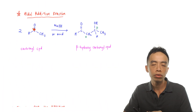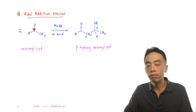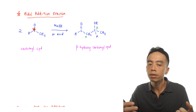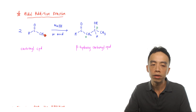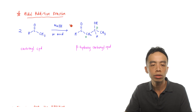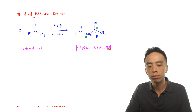Essentially, aldol addition reaction is the reaction between two carbonyl compounds — it can be two aldehydes, two ketones, or even one aldehyde and one ketone. Keeping things simple first: if I have an aldehyde functional group, it can undergo aldol addition reaction in the presence of a base or an acid catalyst to form a beta hydroxy carbonyl compound.